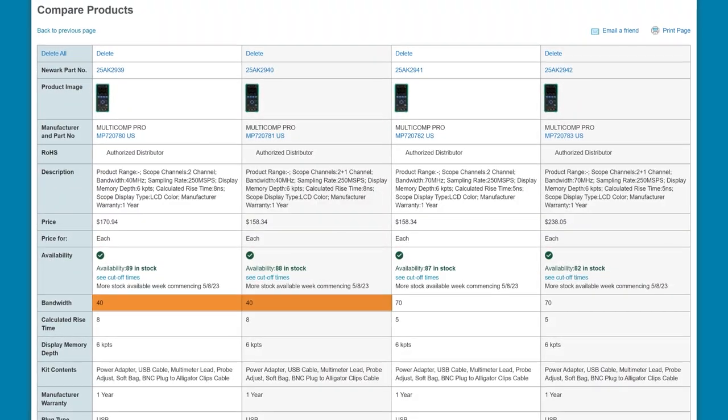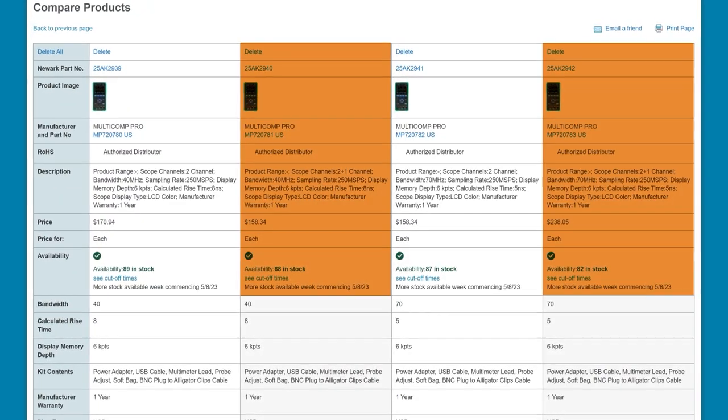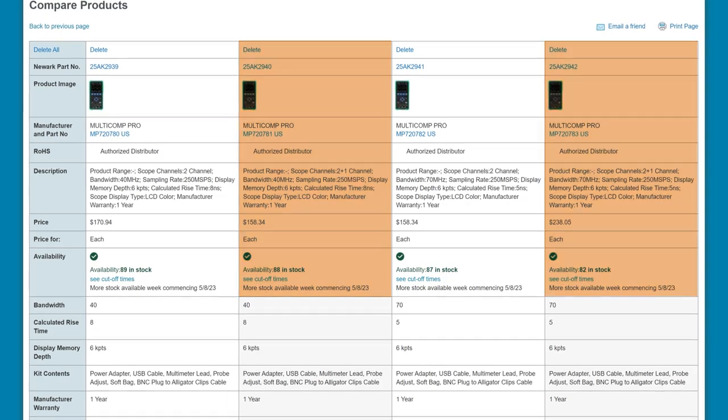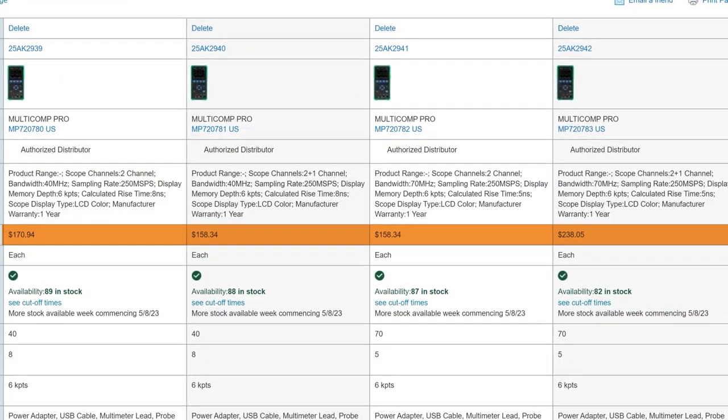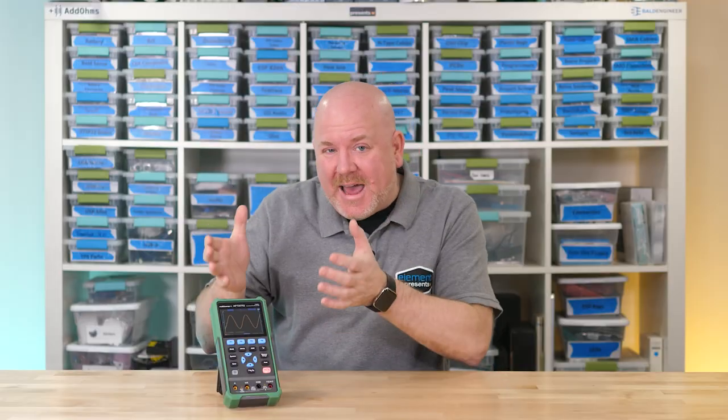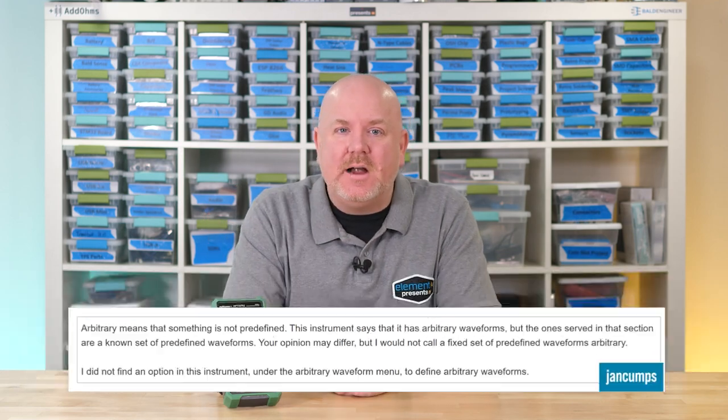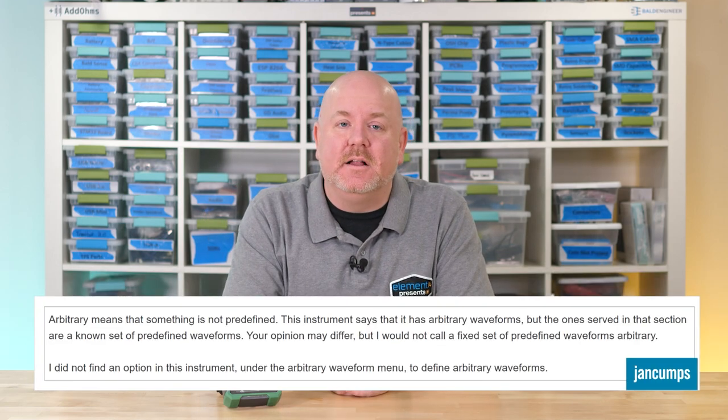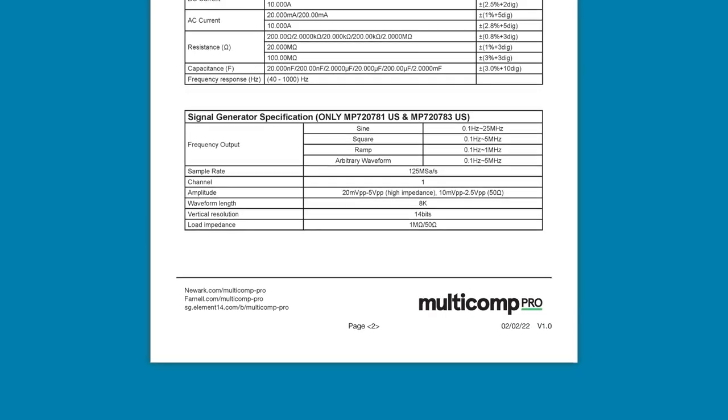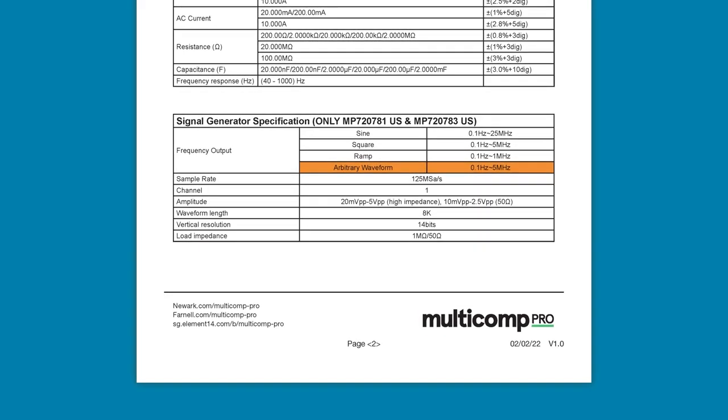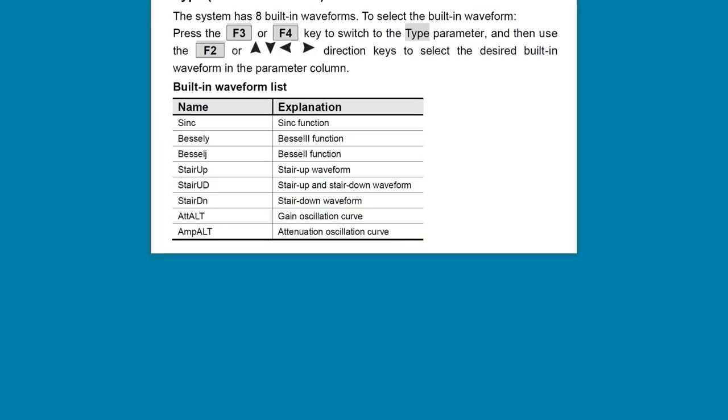There is also a 40 MHz model available, and both bandwidths have an optional waveform generator. Also, the price range for all of these is pretty reasonable. Since the model I have does not have the waveform generator, I was interested to see what Jan on the Element 14 community noticed. Even though the datasheet says the generator has an arbitrary mode, it's actually a handful of built-in functions. Which is kind of a bummer because it would be nice if you could program it with an arbitrary waveform.